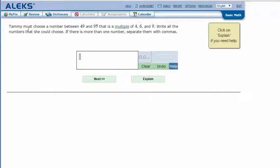Here's an example problem. Tammy must choose a number between 49 and 95 that is a multiple of four, six, and nine. Write all the numbers that she could choose. If there is more than one number, separate them with commas.